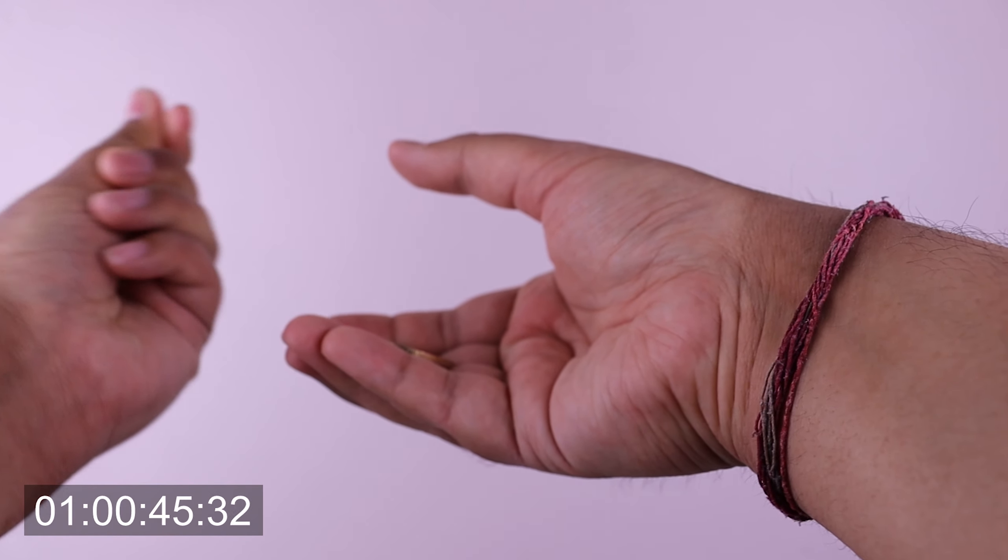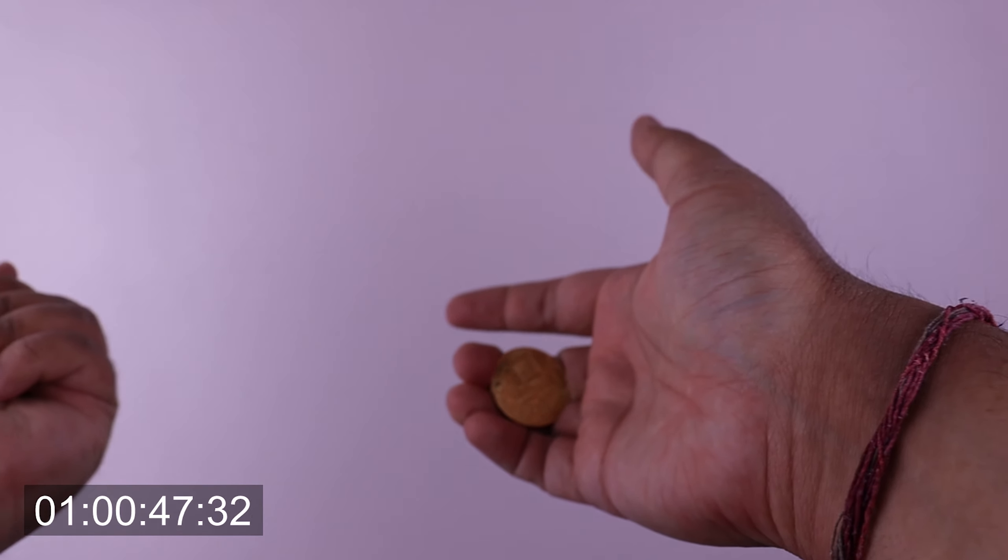Drop the coin back, take it, clip it in this hand, then take your attention away from this hand and just do a false convincer showing here.